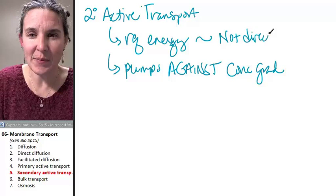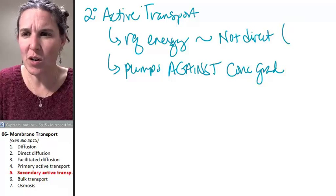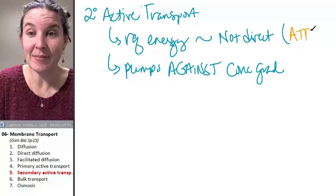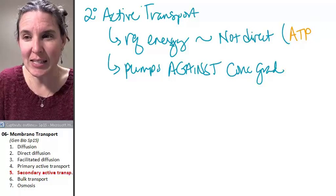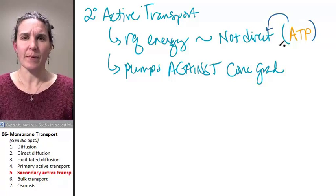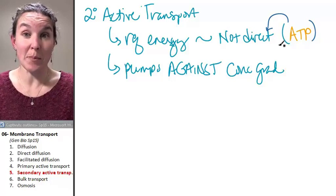What was our direct form of energy in the previous example? ATP is an example of direct energy. ATP is like direct money.